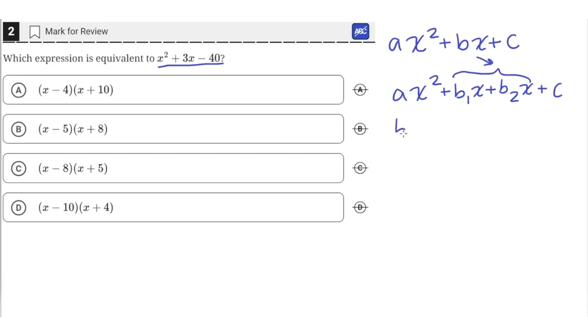Where b1 plus b2 is equal to the original b, and b1 times b2 is equal to a times c, where a is the coefficient of the second degree term and c is the constant.